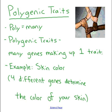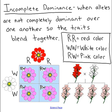The first one I want to talk about is polygenic traits. The prefix 'poly' means many, so polygenic means that many genes make up one trait. An example would be skin color, because there are four different genes that determine your skin color. Using the coin-flipping analogy for alleles, with polygenic traits we would be flipping four coins — there are still dominant and recessive alleles, but many genes make up one trait.